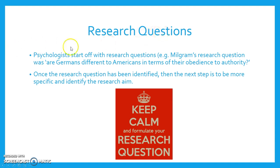Research questions. Psychologists start off with research questions. For example, Milgram's research question was: Are Germans different to Americans in terms of their obedience to authority? Once the research question has been identified, the next step is to be more specific and identify the research aim.